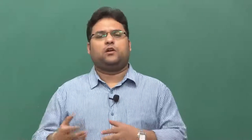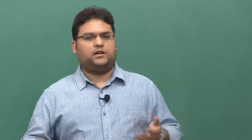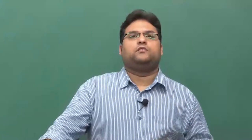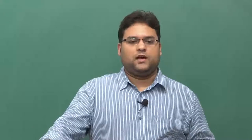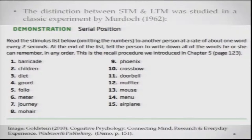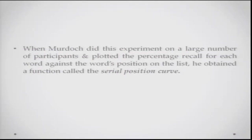Any memory that we talk about as lay persons is generally long-term memory. In Murdoch's demonstration, there are 15 words repeated to participants at one word every 2 seconds, after which they are asked to recall in any order — a procedure called free recall. When Murdoch plotted percentage recall against word position in the list, he obtained what is called a serial position curve.